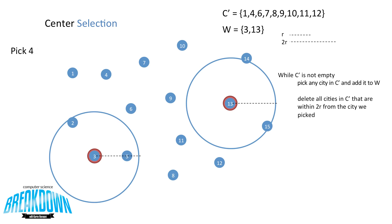Next we'll pick 4. So we can now remove 4 from c' and add it to w. And now draw our 2r radius circle around 4. Cities 1, 6, and 7 fall within this circle, so we can delete those from c'.